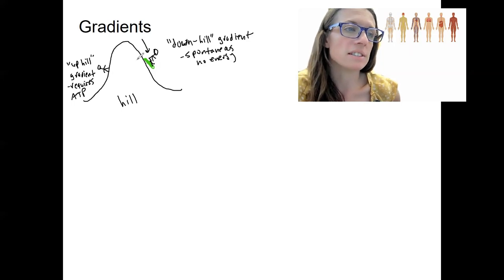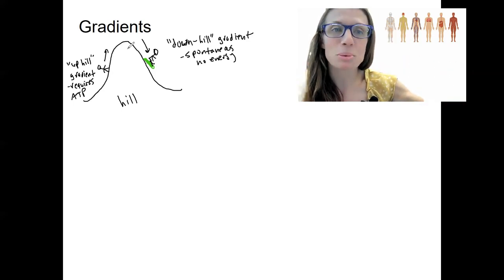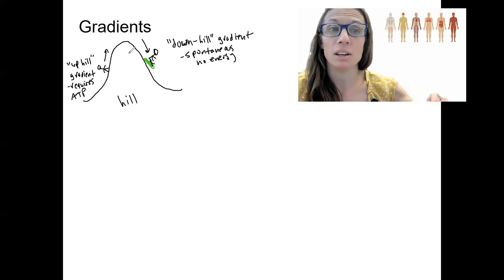So this way, the downhill gradient, this way is an uphill gradient. Those same terms, that same terminology is going to be used to talk about gradient in our body. Uphill meaning requires ATP, downhill meaning is spontaneous.